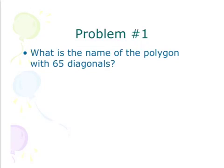Alright, so this is a little review of chapter 7. We're going to start with this one here. It has to do with diagonals. What is the name of the polygon with 65 diagonals?